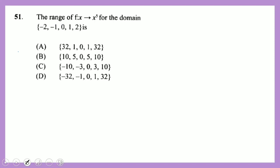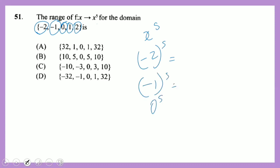Question 51: find the range of the relation f(x) = x⁵ for the domain {−2, −1, 0, 1, 2}. Calculate each: (−2)⁵ = −32, (−1)⁵ = −1, 0⁵ = 0, 1⁵ = 1, 2⁵ = 32. The range is {−32, −1, 0, 1, 32}.